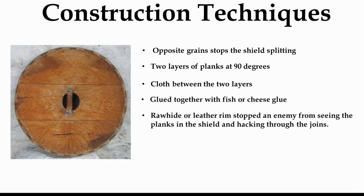They would often put cloth between the two layers of planks and stick it down with fish or cheese oil. Around the outside, they would add a rawhide or leather rim. The reason for this rim is to stop an enemy from seeing where the planks meet — because if you're coming with your sword or axe, and axes are basically shield-smashers, if you can see the plank gaps you can whack your axe into that gap and cut right through the shield. A split shield is useless, so the rim conceals the seams and prevents the shield from being hacked apart.